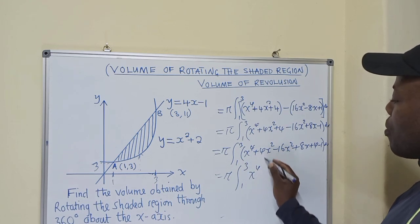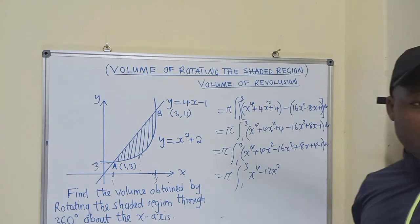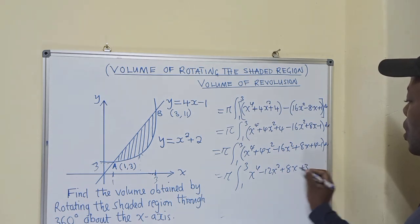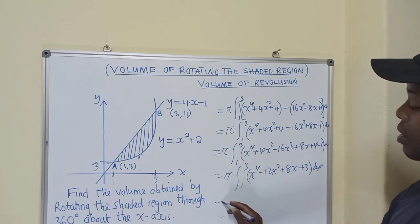So here, what are we getting? We are getting x^4. Here, it's 12x^2. Is that clear? Here, we are getting 8x and here is 3x. So now we can integrate this.